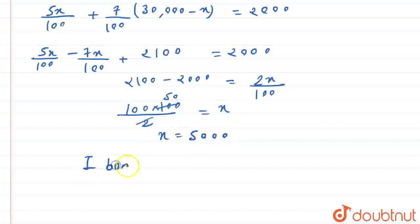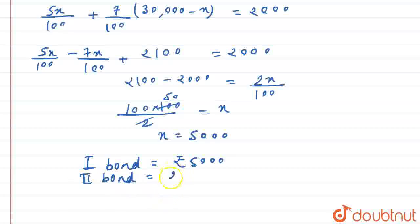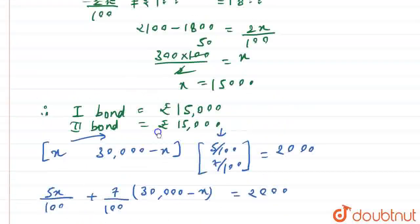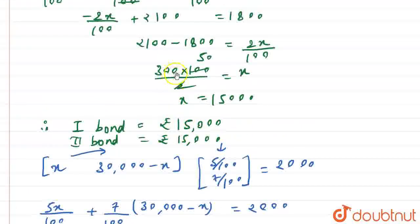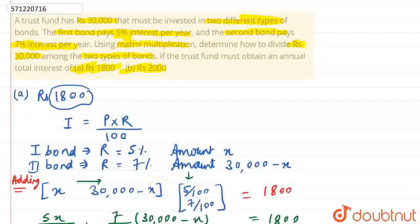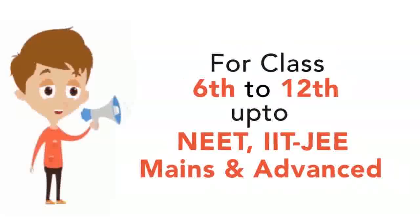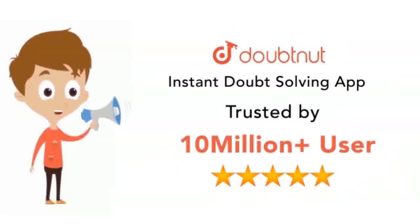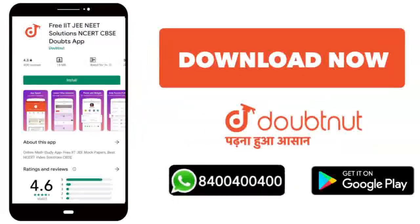The first bond will have an amount of Rs. 5,000 and the second bond will have an amount of Rs. 30,000 − 5,000 = Rs. 25,000. So, to obtain a total interest of Rs. 2000, we divide as Rs. 5,000 and Rs. 25,000; and to obtain Rs. 1800, we divide equally as Rs. 15,000 and Rs. 15,000. Thank you.